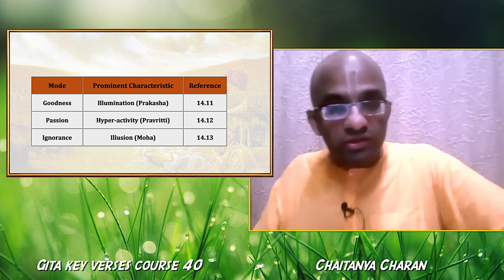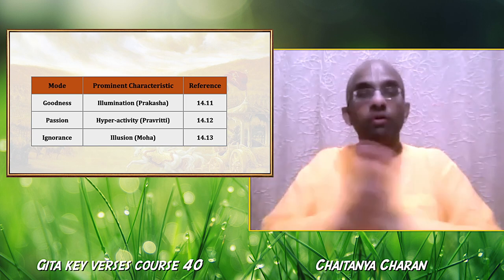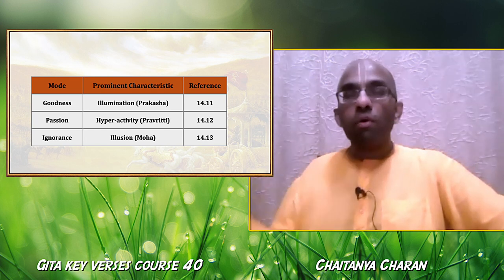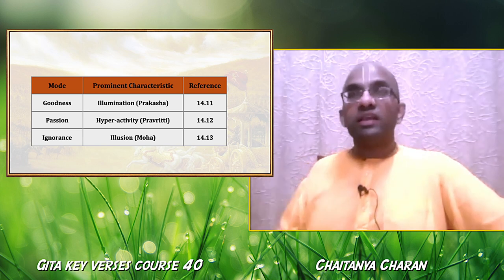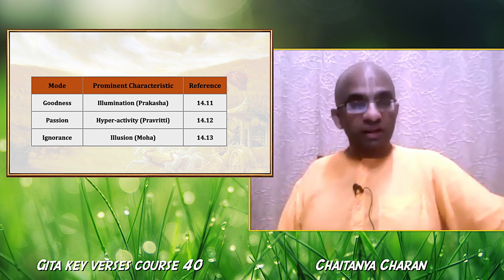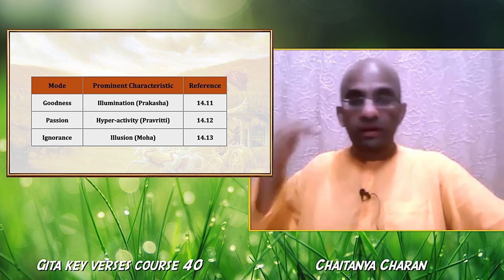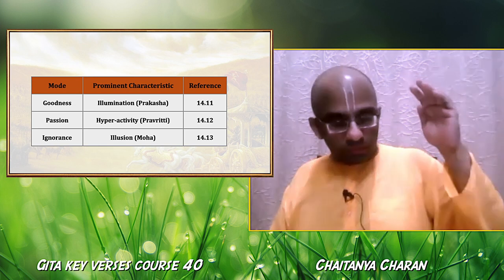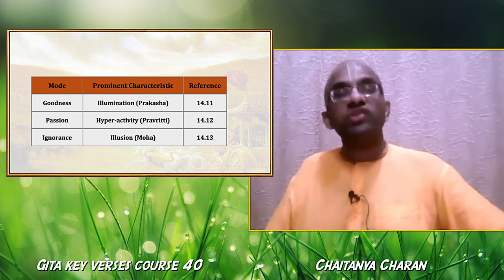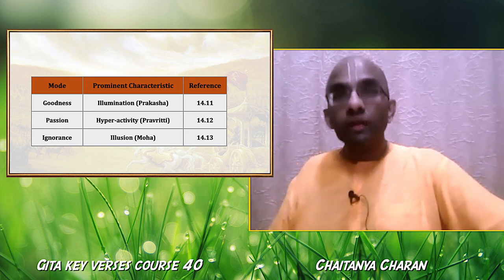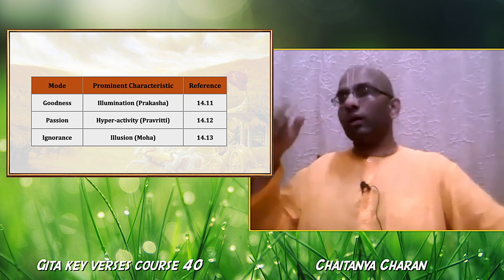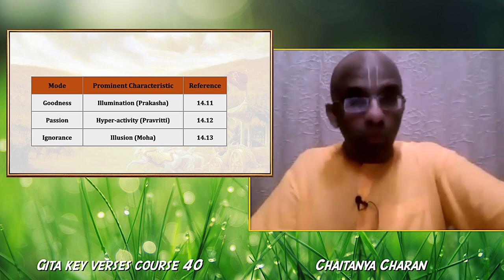The mode of ignorance Krishna describes more in negative terms. He says there is neither illumination nor activity in this mode — there is just Moha, complete delusion. For example, if somebody is drinking and in an alcohol-induced stupor, that is Moha.